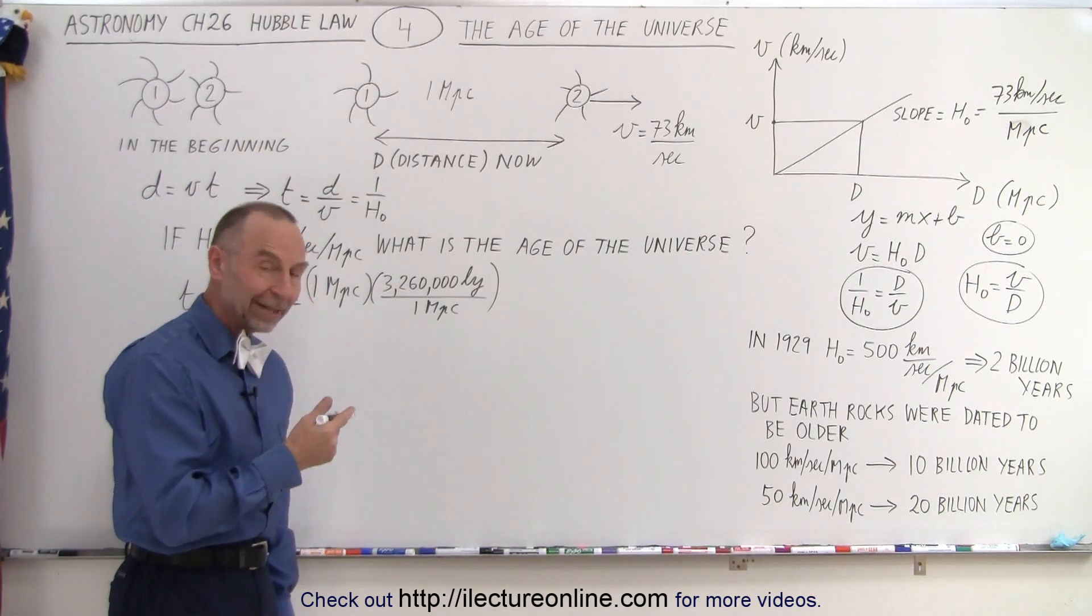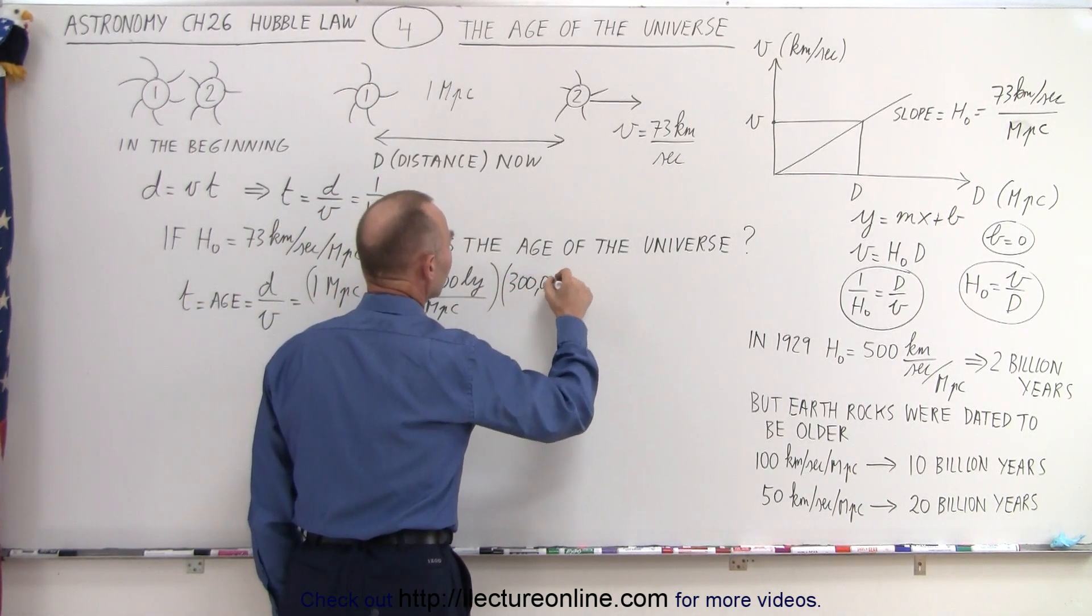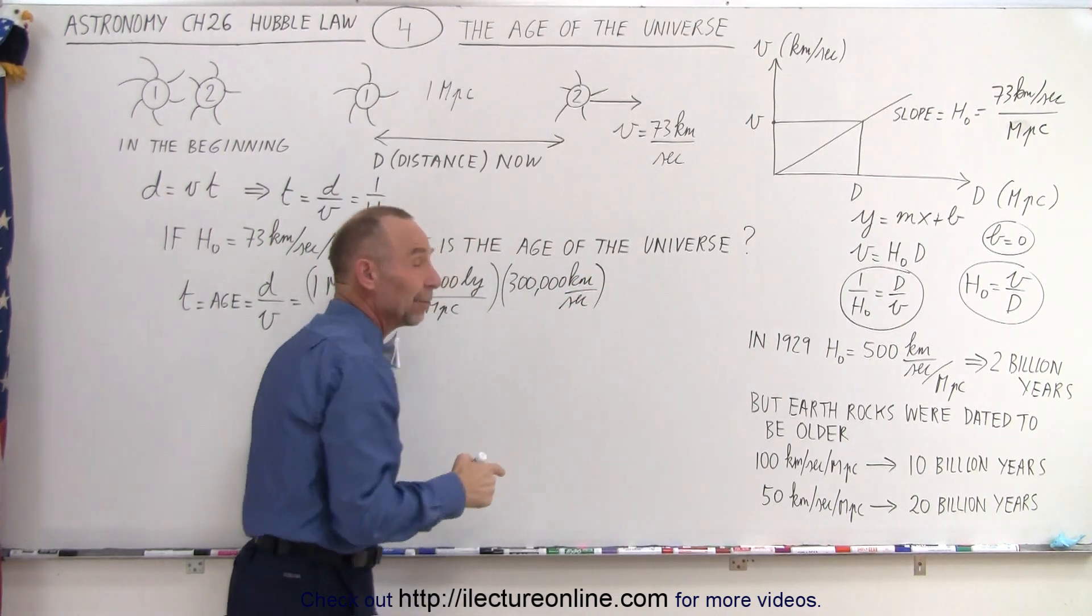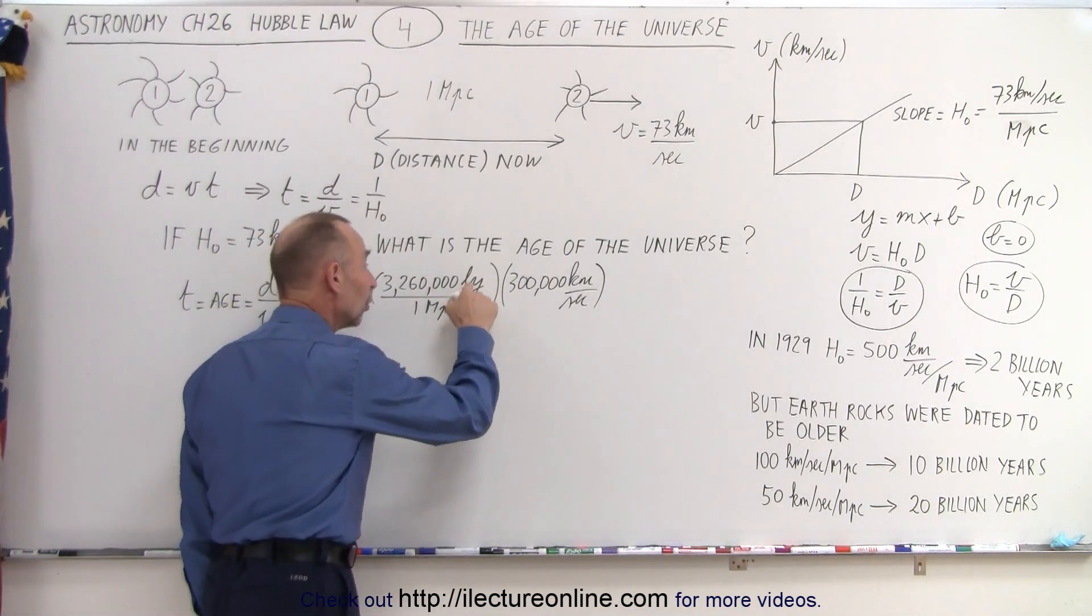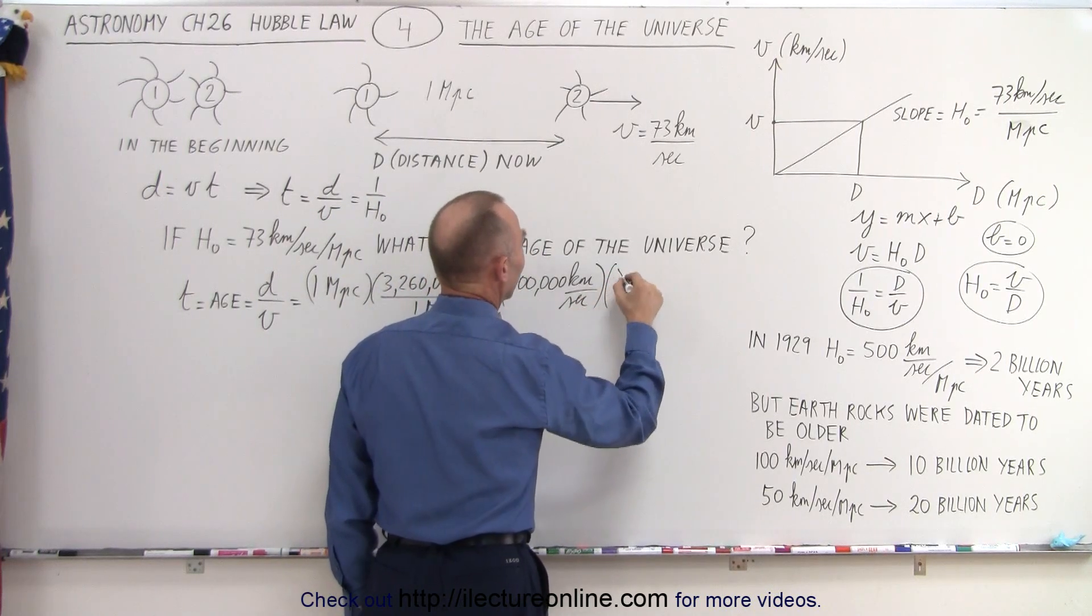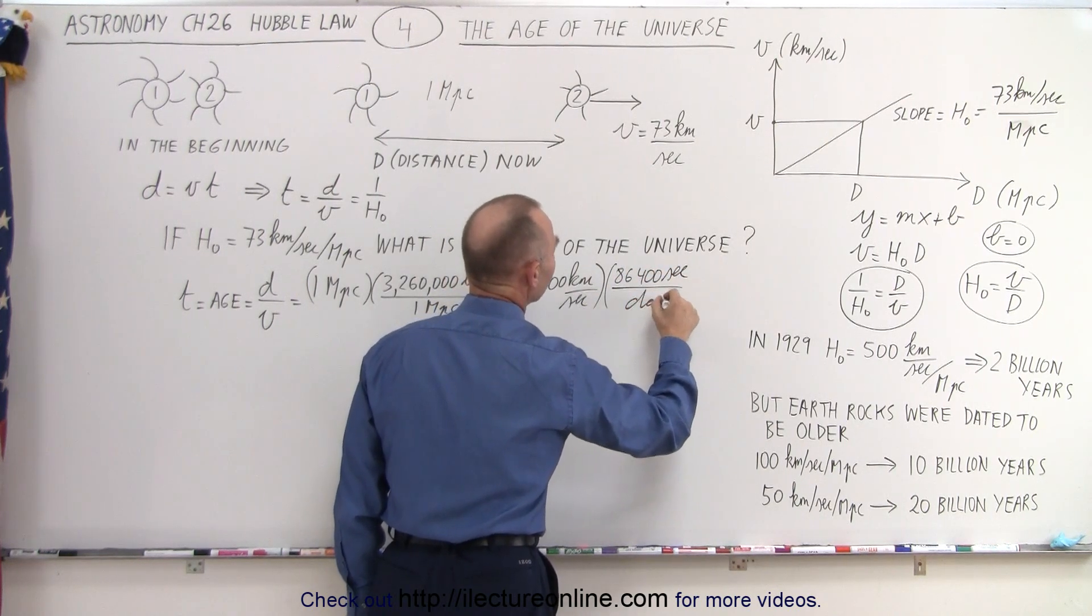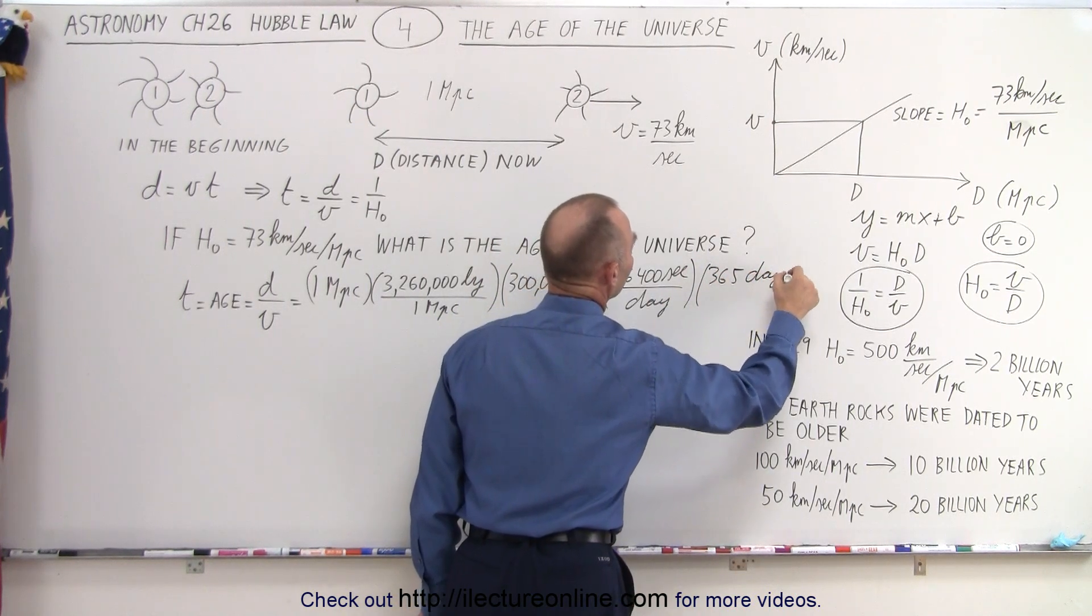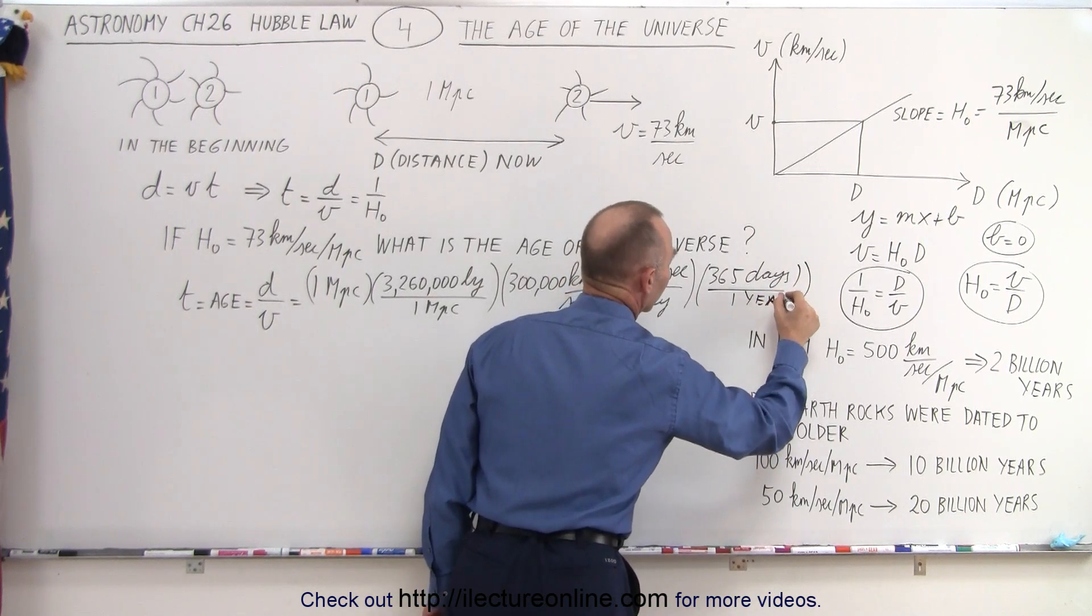So a light year is the distance light travels in a year. Light travels at a speed of 300,000 kilometers per second. And now I have to multiply that times the number of seconds in a year, and that converts light years to kilometers. So that means we have 86,400 seconds per day, and then there are 365 days in one year.